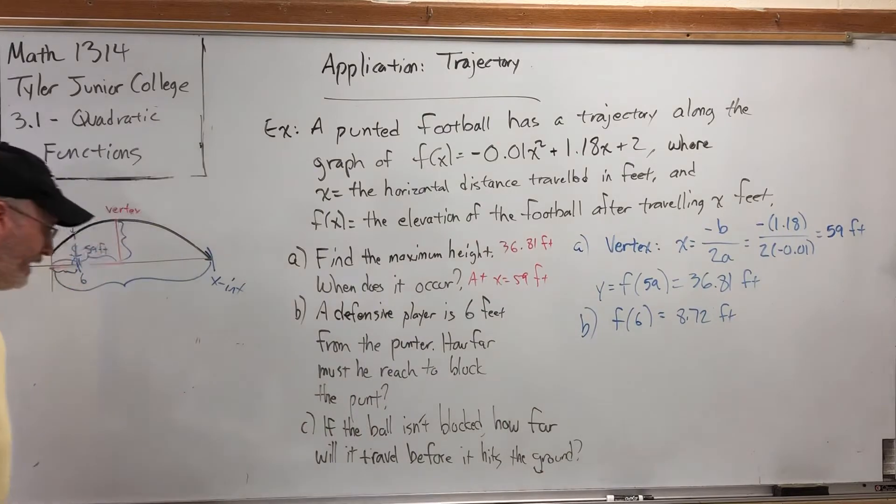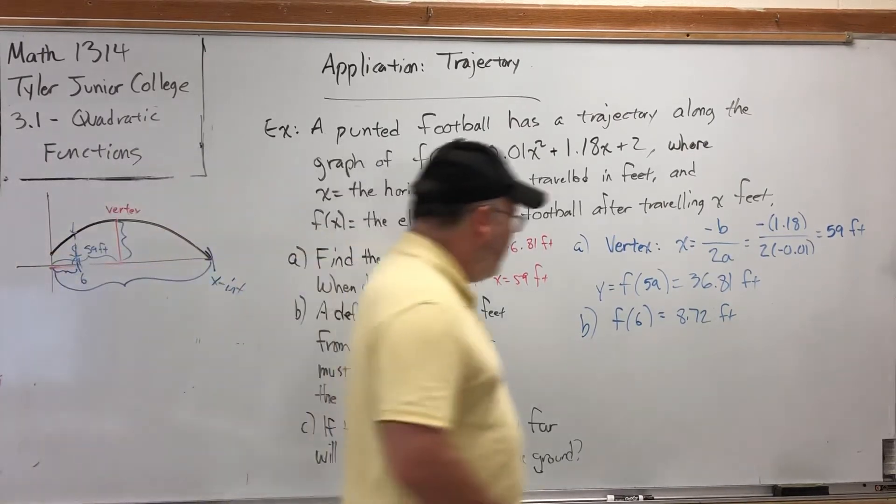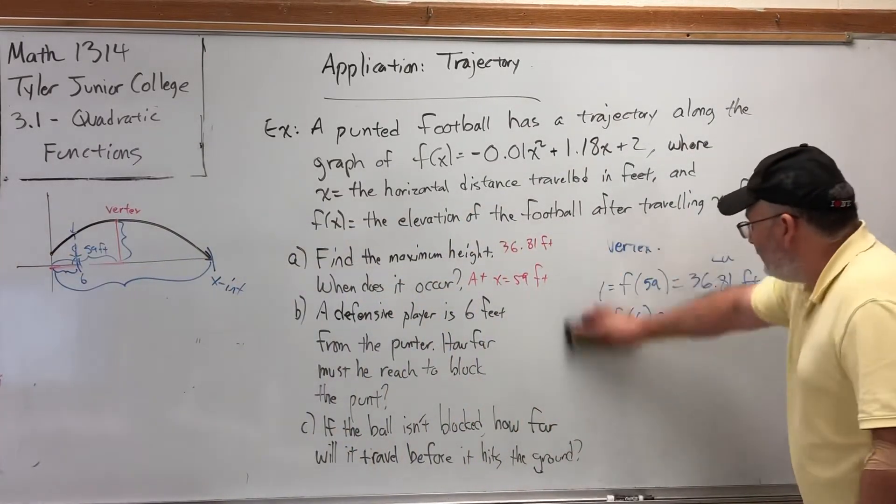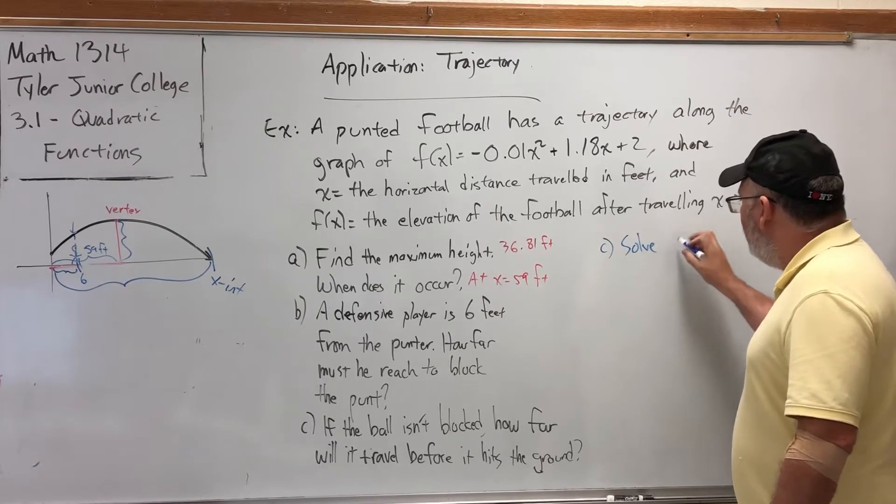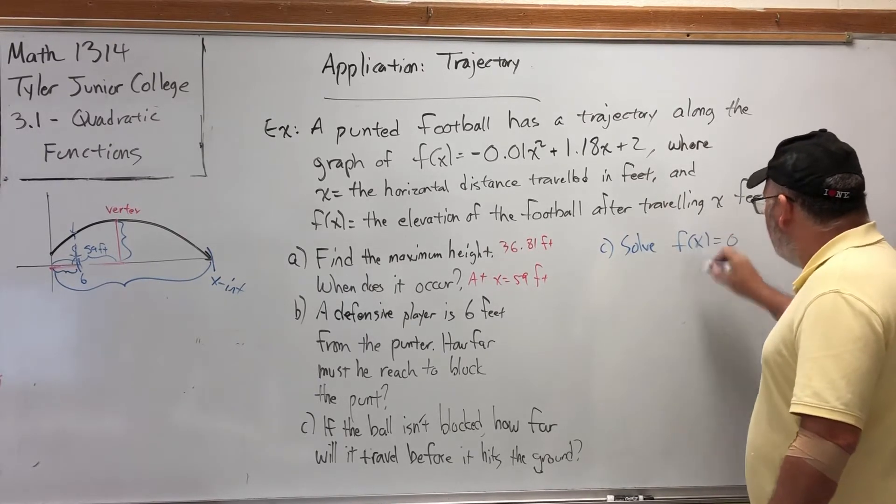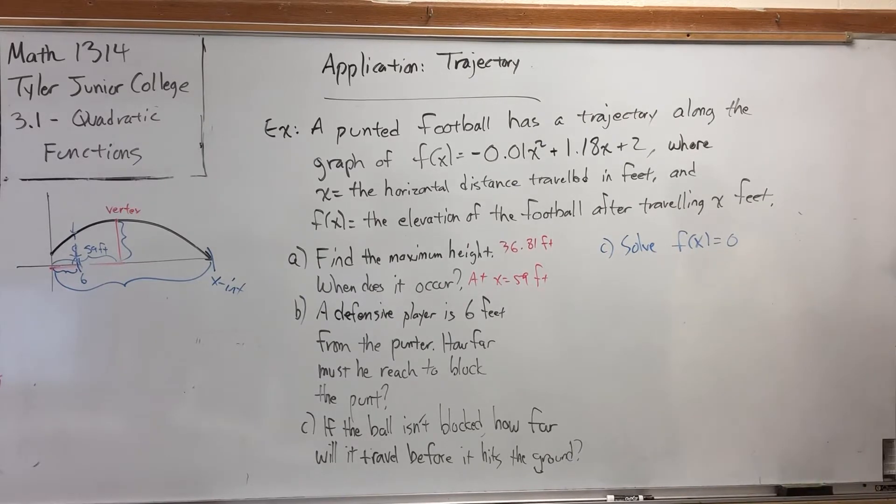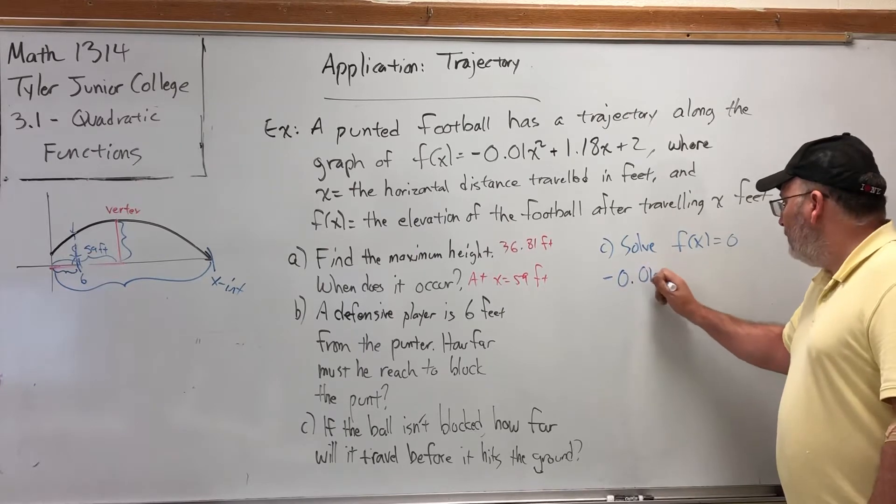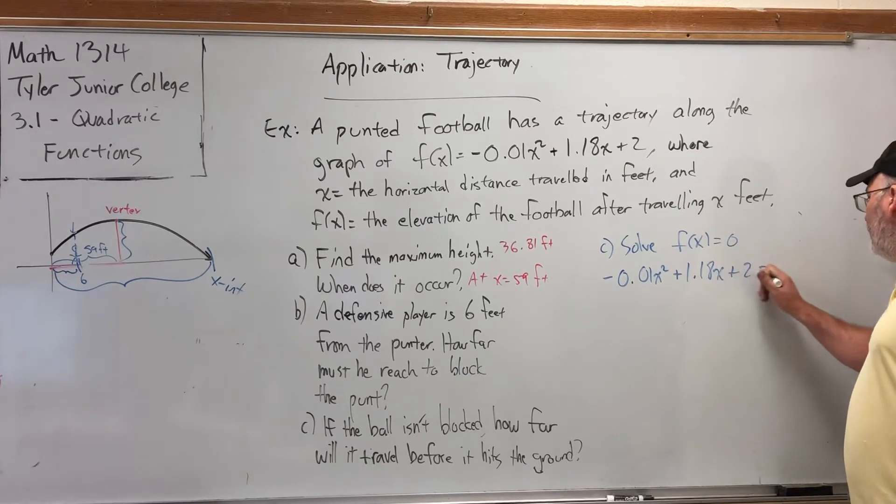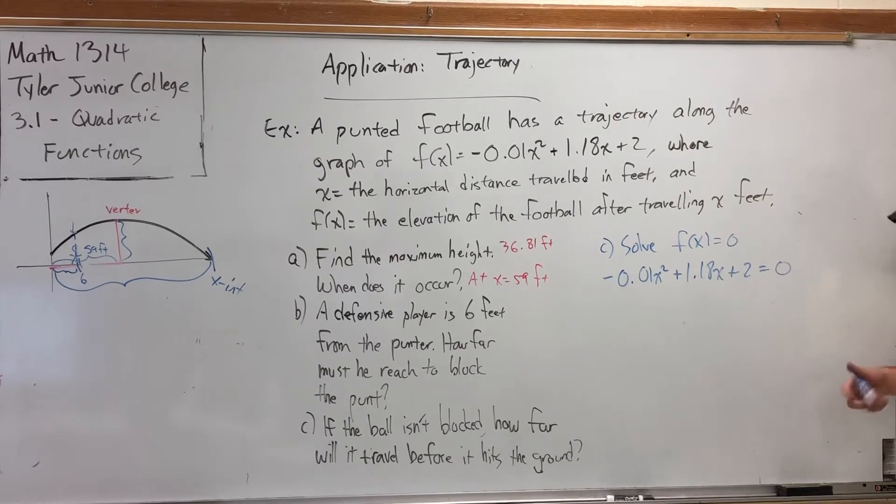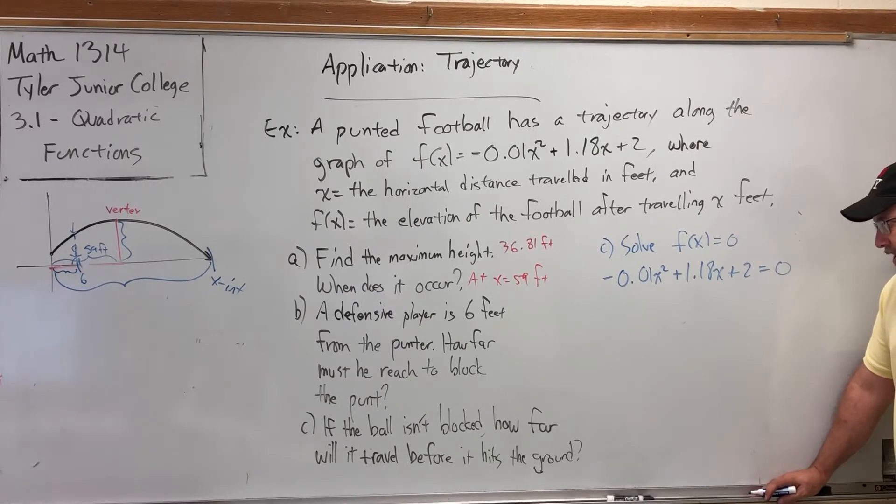But if the ball isn't blocked, how far will it travel before it hits the ground? Well, that's asking, what is this X intercept? So we have to find the X intercept. And to find the X intercept, we have to put the function equal to zero and solve it. So here comes the quadratic formula. We have to solve the function equal to zero. There's a technique I would normally recommend. In fact, I'm going to. Why? Because if you're watching this video, I want you to learn things that make math easier, not harder. If I were solving this, I would not get out the quadratic formula yet for two reasons. Number one, the negative in front, which I know how to fix. And number two, all the decimals.